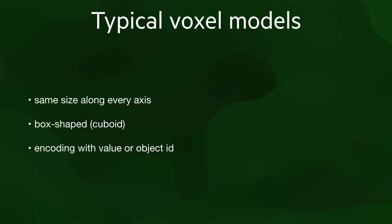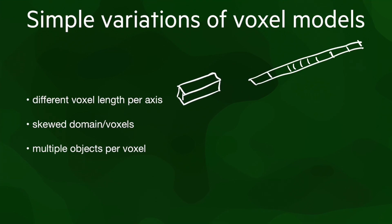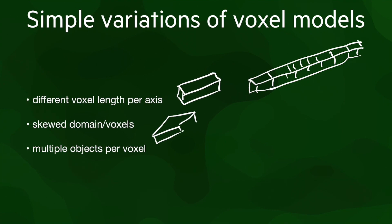Departing from these typical models, we can describe the most common variants based on how they differ from the typical ones. The length of the voxel can be different along every axis, or the size can even differ within an axis, both of which are useful when the resolution of the data is not the same everywhere and in all directions. The voxels and the domain can be skewed parallelepipes, with axes that are not perpendicular to each other, and multiple values or objects per voxel can be encoded at once.